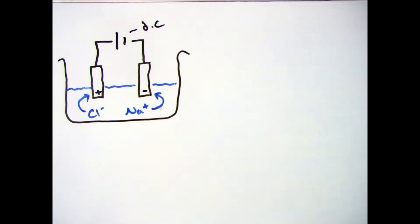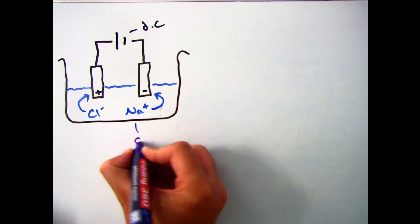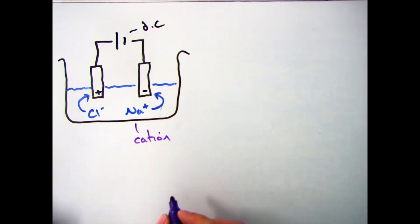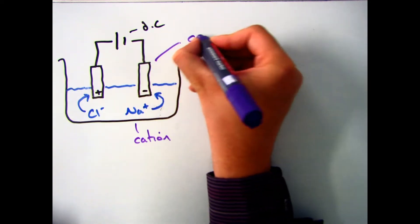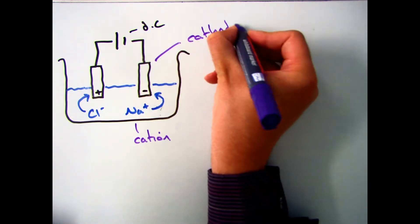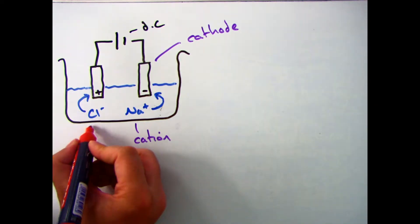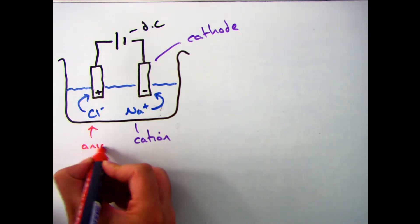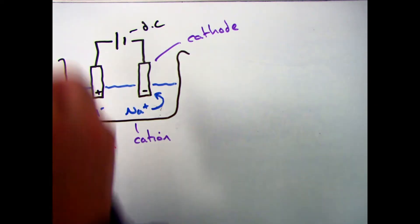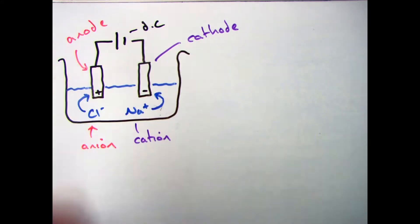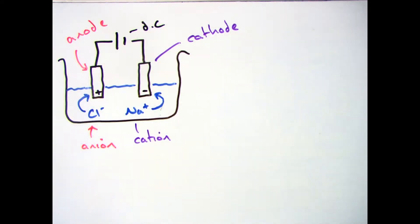When electrolysis occurs, those ions move to the opposite charged electrode. Sodium, which is the cation, will move to the negative cathode. The way to remember it: cation is positive, so the positive charge will move to the negative cathode. The anion chlorine will move to the anode, so the negative ion will move to the positive electrode.